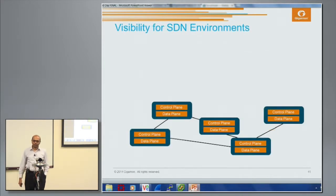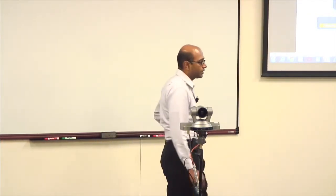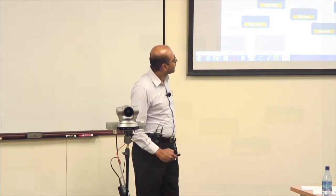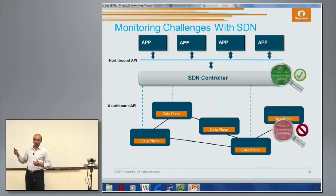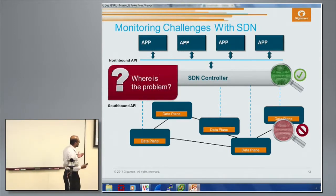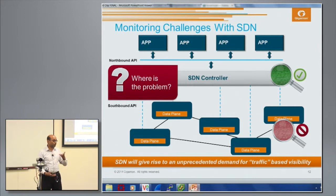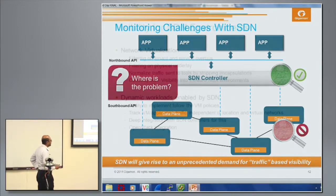In an OpenFlow-based SDN environment, the abstraction of the control plane from the data plane means that intelligence moves into an SDN controller, and applications talk to that controller. The monitoring and visibility challenges in this world are quite different — you're not communicating precisely with the controller. What happens if there's a flaw in the underlying switch? Traffic-based visibility becomes even more important when the controller is separated from the headless data plane, because you don't know exactly where the actual problem is.